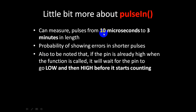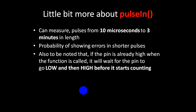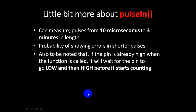A little more about the pulseIn function: you can measure a signal from 10 microseconds to three minutes in length. If the on time or off time is less than 10 microseconds it will not work correctly, and if the on time or off time is over three minutes it will also not work properly. If your signal is too short there is a probability of getting an error in your value.